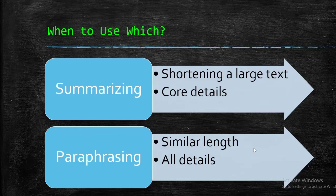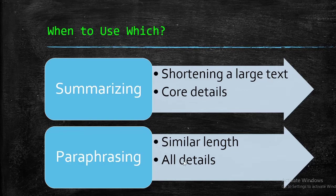When summarizing, we are only looking at the core details — we are not capturing every single point that the whole text had. On the other hand, in paraphrasing we have to incorporate all the details of the text. So if the original text had 300 words, our paraphrased text will also have more or less 300 words. It cannot be 100 words or 500 words — it has to be of similar length.